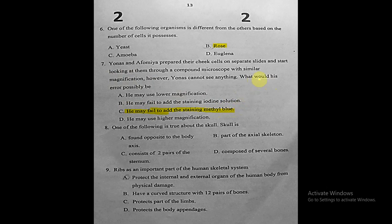Question eight: one of the following is true about the skull. The skull is not attached to the body axis, does not consist of two pairs with the sternum, and is not composed of several bones as a single unit — but it is part of the axial skeleton. So the correct answer is: part of the axial skeleton.